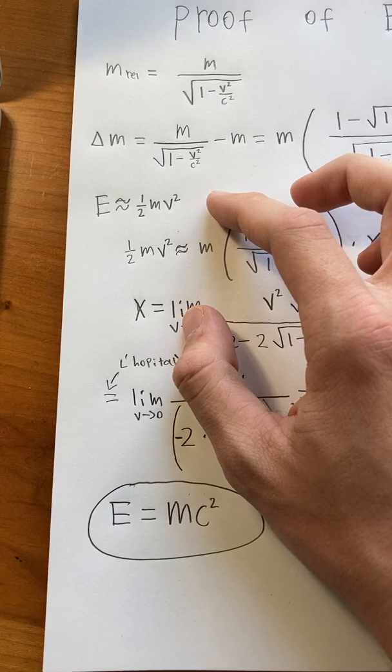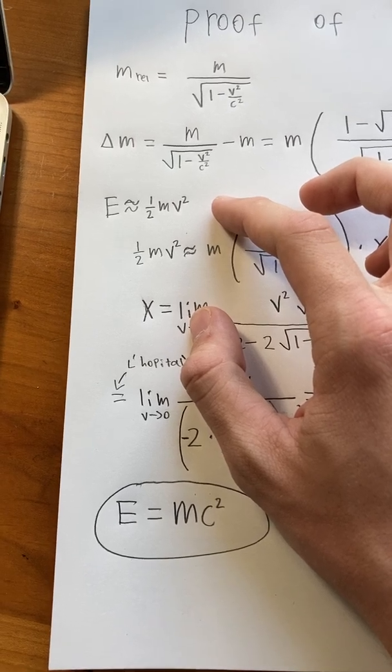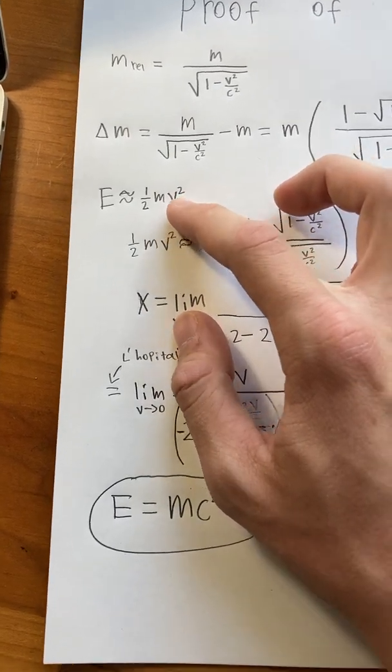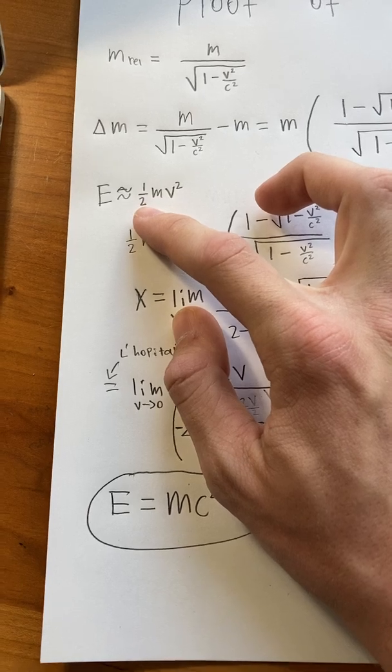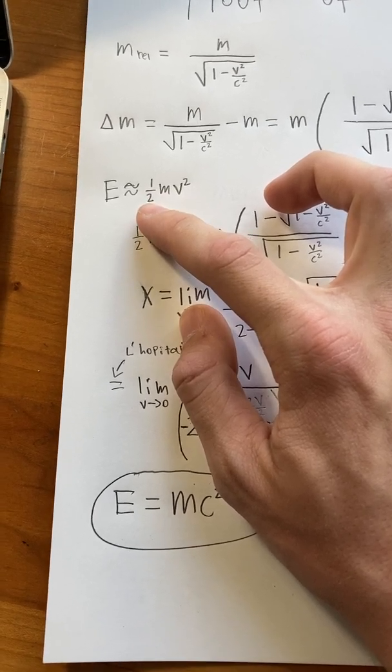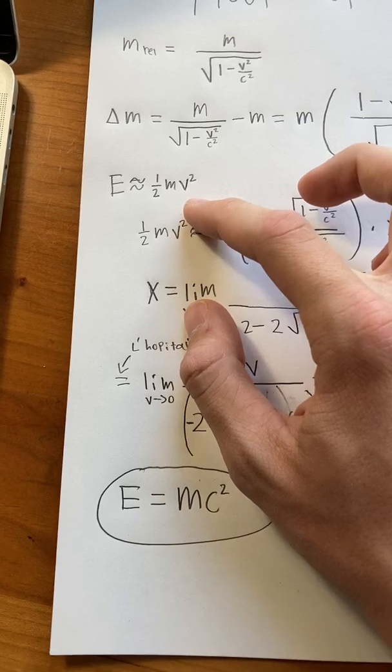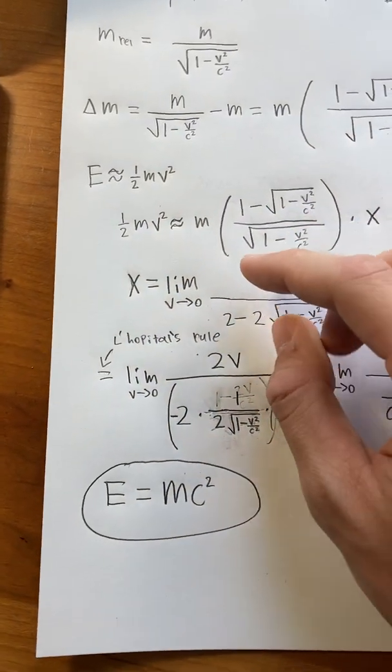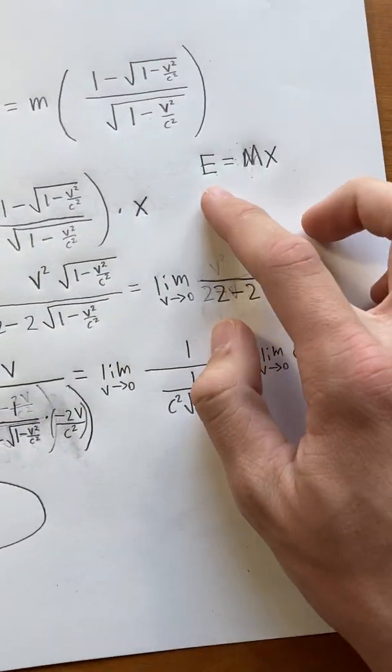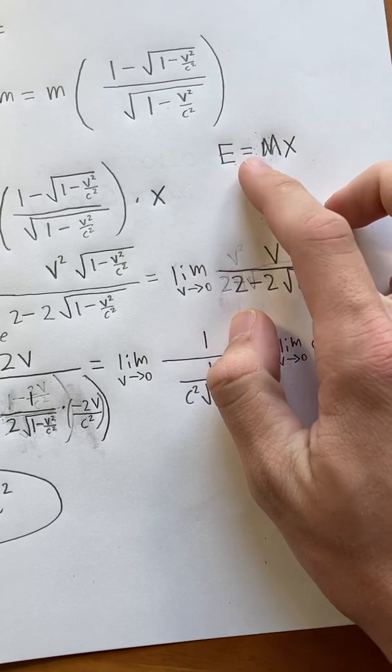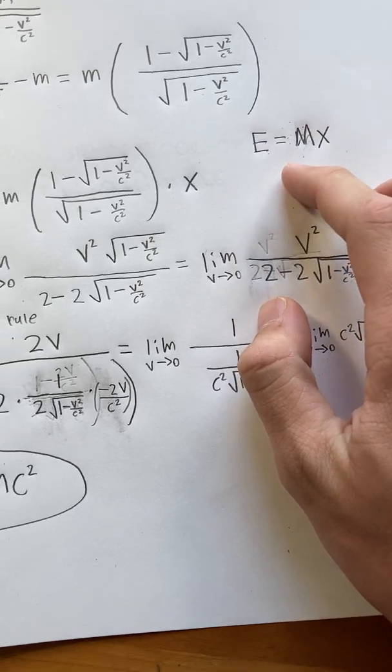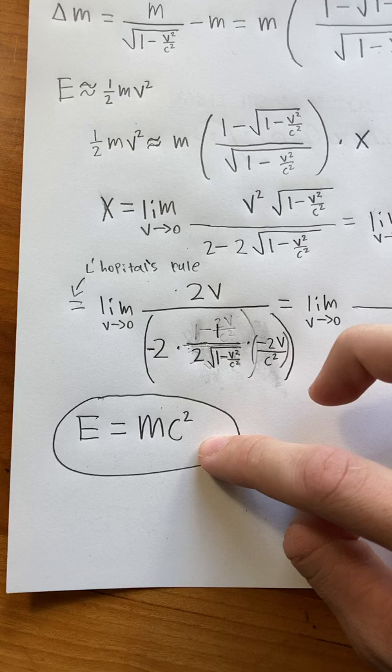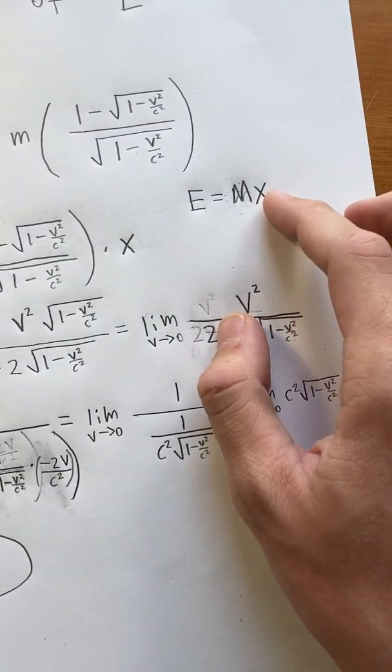But on the other hand, we can approximate the energy involved by using Newtonian physics. And so this approximation gives us that the energy that we've added is 1 half mv squared. So what we can do is we can assume that it equals mx, and then what we're trying to do is solve for x, and we will eventually show that x equals c squared. But for now, we don't know what x is.